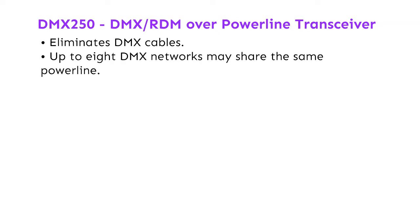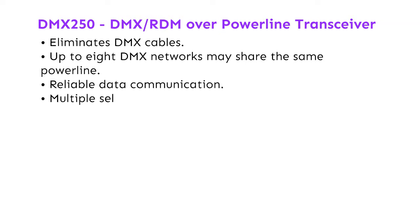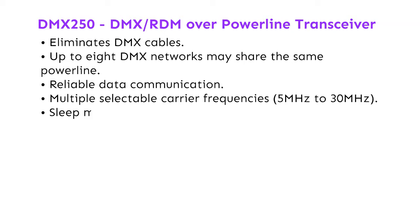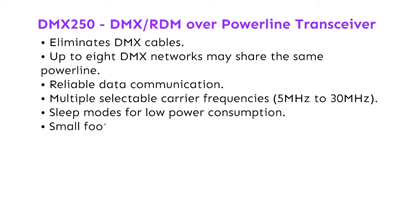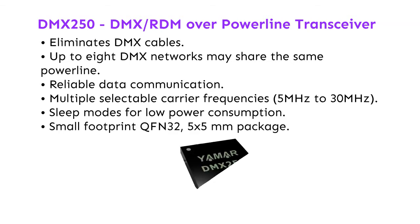Up to 8 DMX networks may share the same power line. Key features include reliable data communication, multiple selectable carrier frequencies from 5 to 30 MHz, sleep modes for low power consumption, and a small footprint QFN32 5 by 5 mm package.